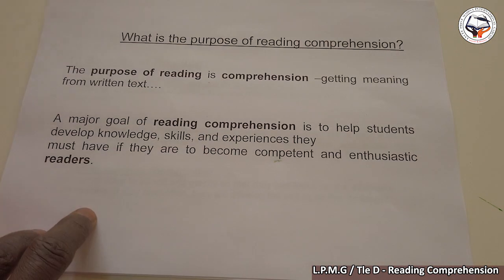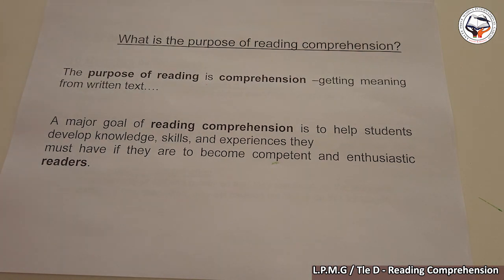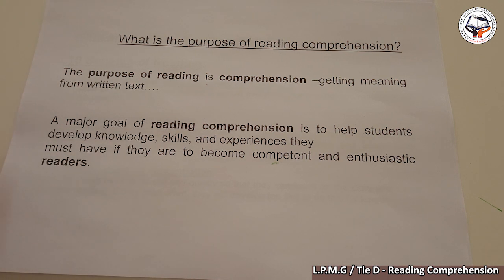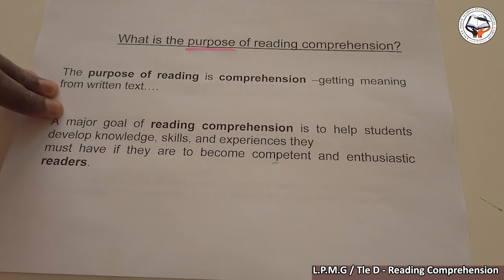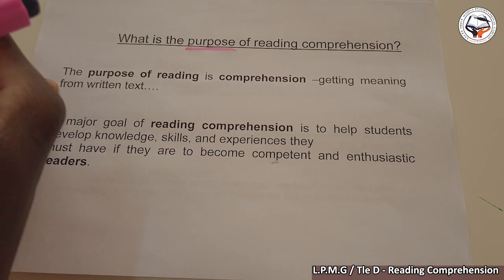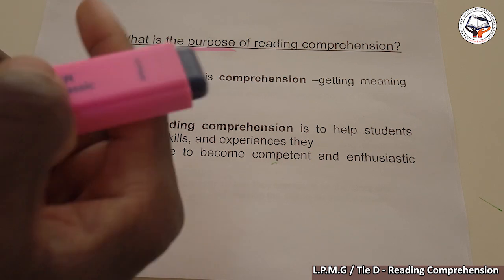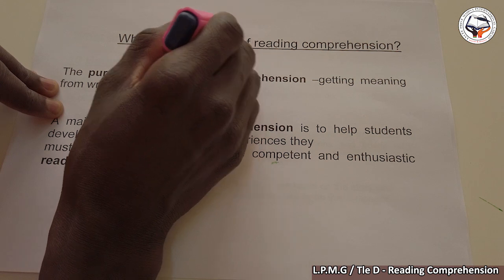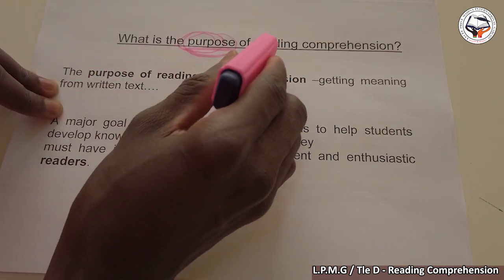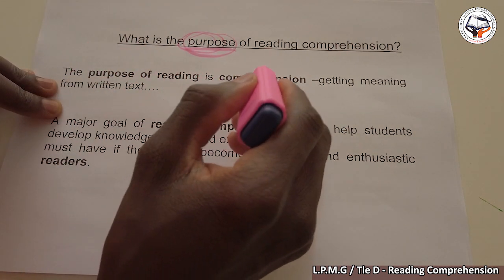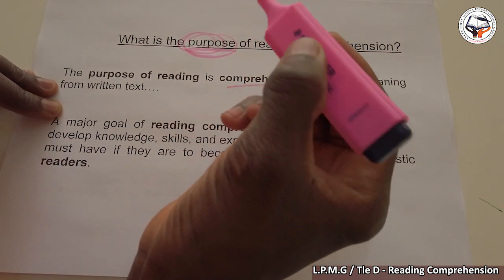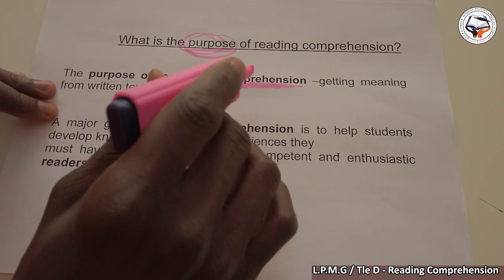We are going ahead with another question. After asking what reading comprehension is, we are also going to ask: what is the purpose of reading comprehension? Why are we reading? We are reading for words. The purpose of reading is comprehension — getting meaning from written text. You read a text and you understand it.